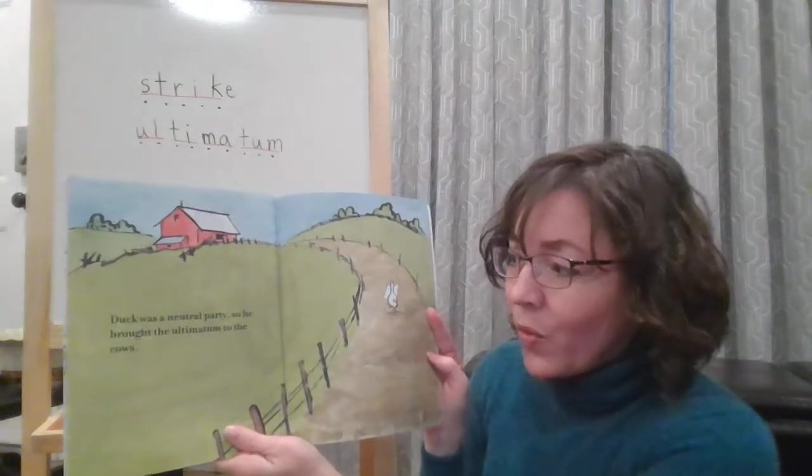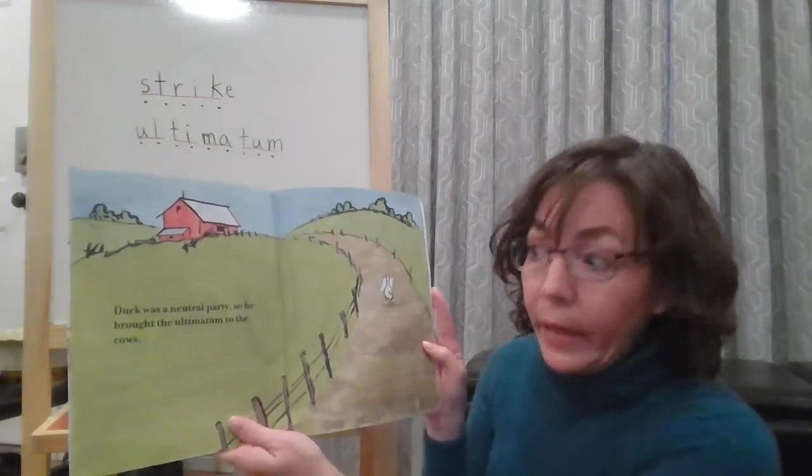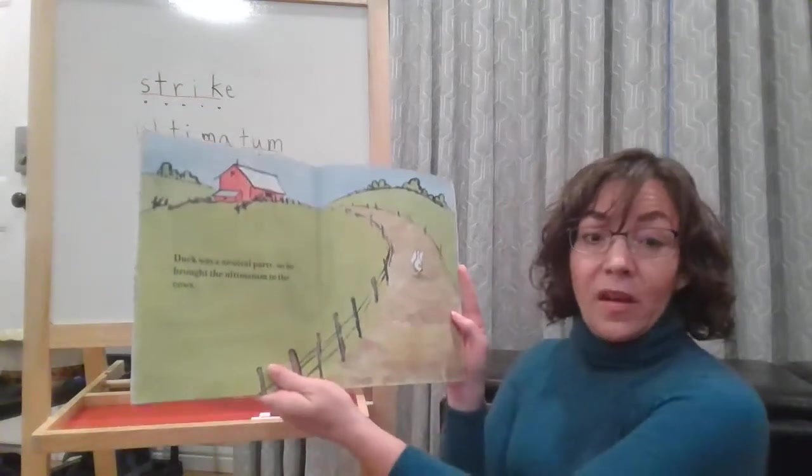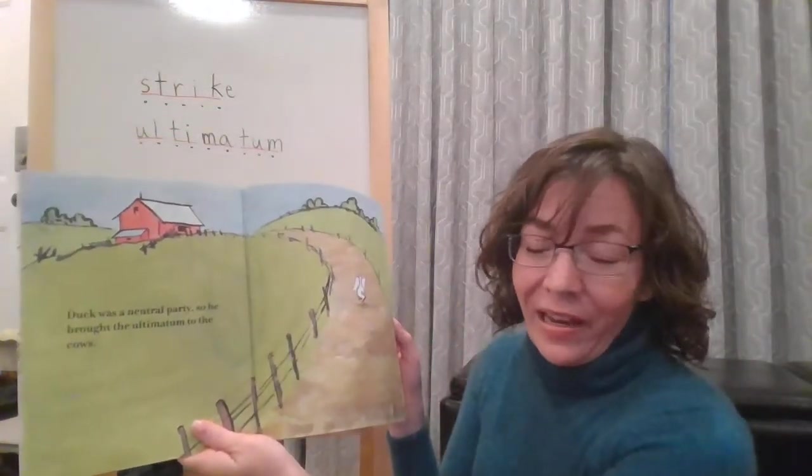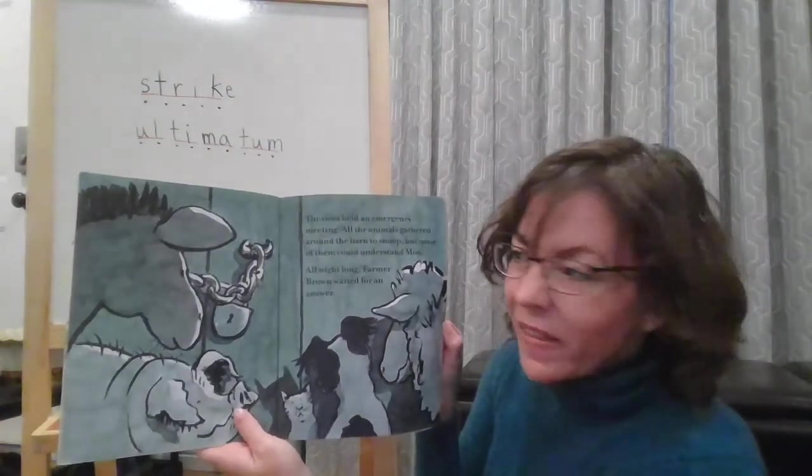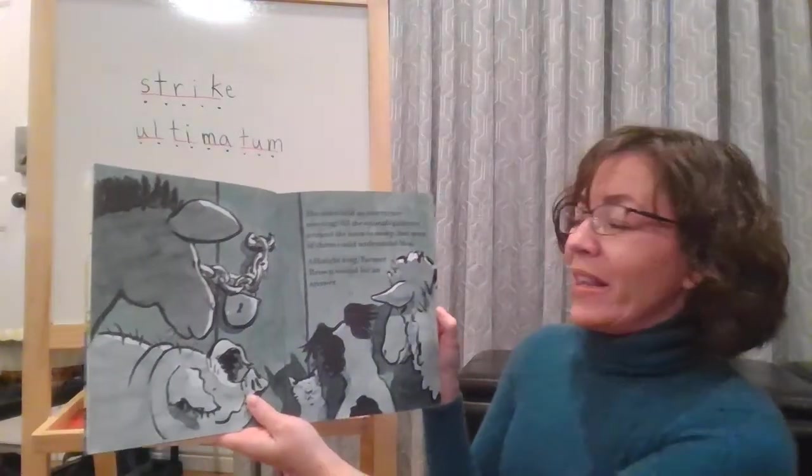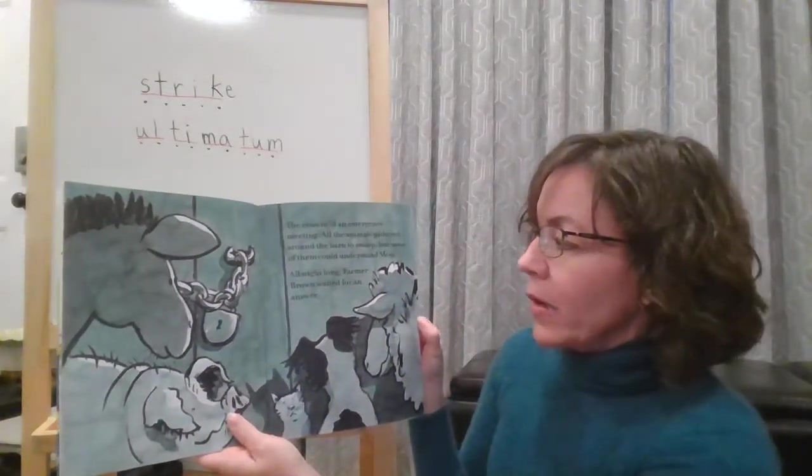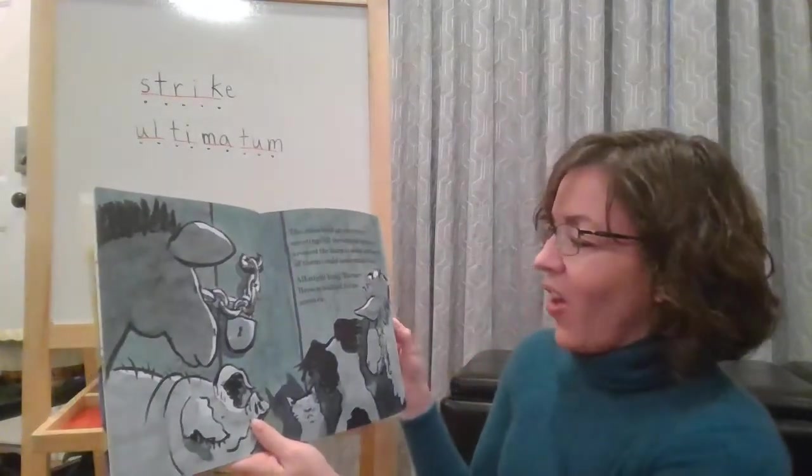Duck was a neutral party, so he brought the ultimatum to the cows. So Farmer Brown said, you have to give me milk and eggs. The cows held an emergency meeting. All the animals gathered around the barn to snoop. But none of them could understand moo.